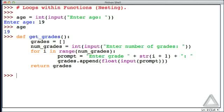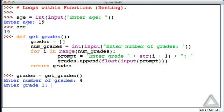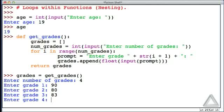Now let's see if this works properly. Let's assign to an identifier grades whatever the get_grades function returns. Hitting return we have enter number of grades. Let's go with four grades. Enter grade number one, how about 90. Grade two, let's go with 80. Grade three, maybe 83, and grade four, 97.